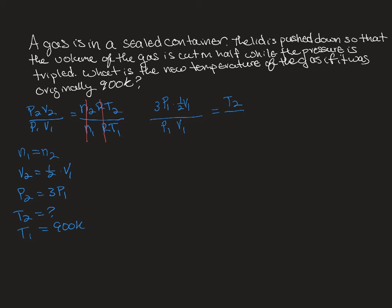So now I can cancel out the P1s and the V1s. And I'm left with three halves equals T2 over 900 Kelvin. So I'm going to multiply the 900 Kelvin to both sides.